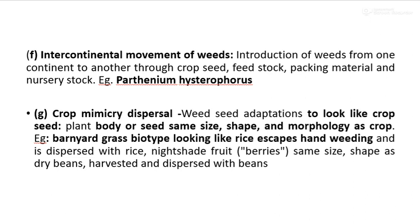Crop mimicry dispersal: weed seeds adapted to look like crop seeds are called mimicry weeds — their plant body or seeds are similar in size, shape, and morphology to the crop. For example, barnyard grass biotypes look like rice and are dispersed with rice during hand-weeding. To summarize, weeds are transmitted from one place to another by different agencies: wind, water, animals, equipment, intercontinental movement, and crop mimicry dispersal.